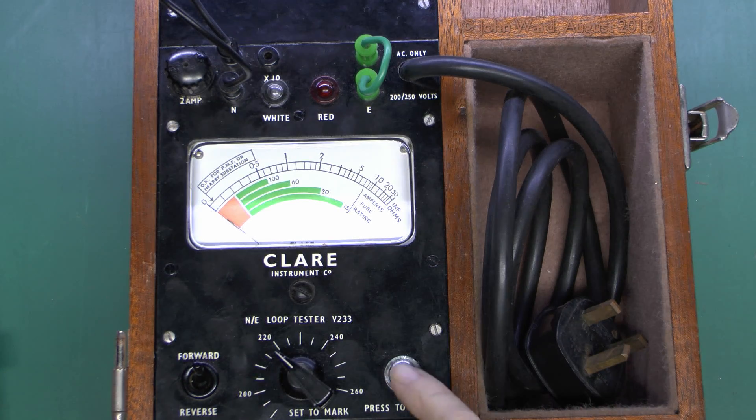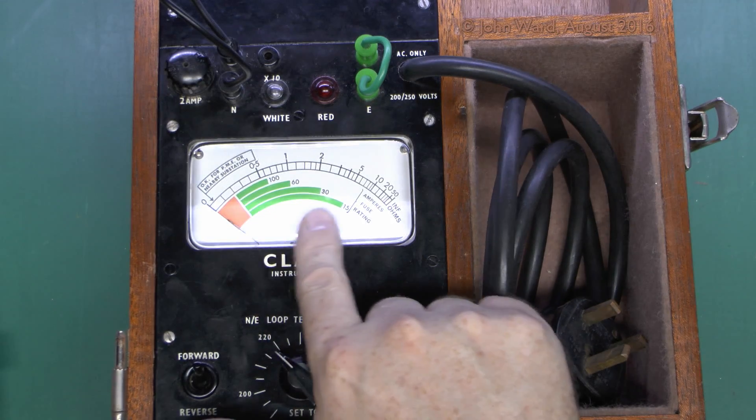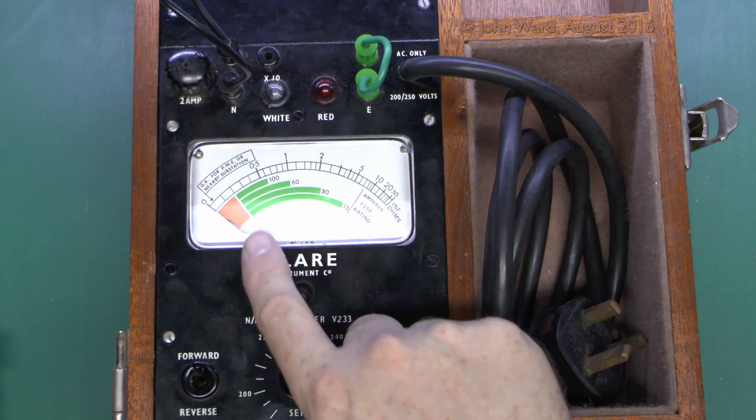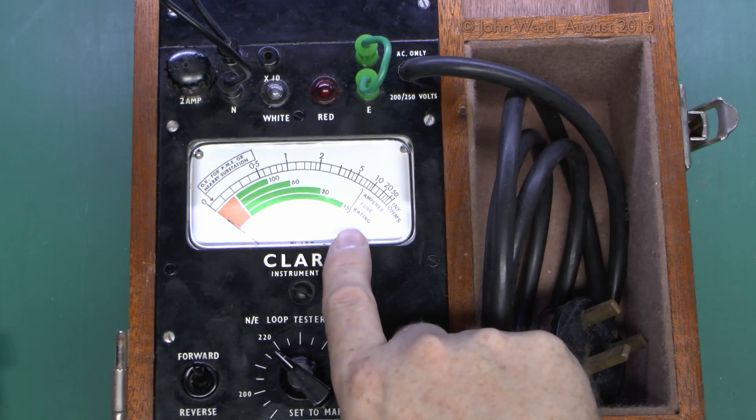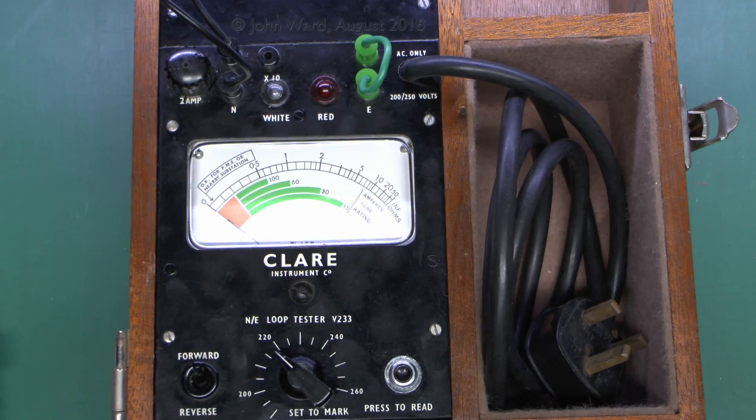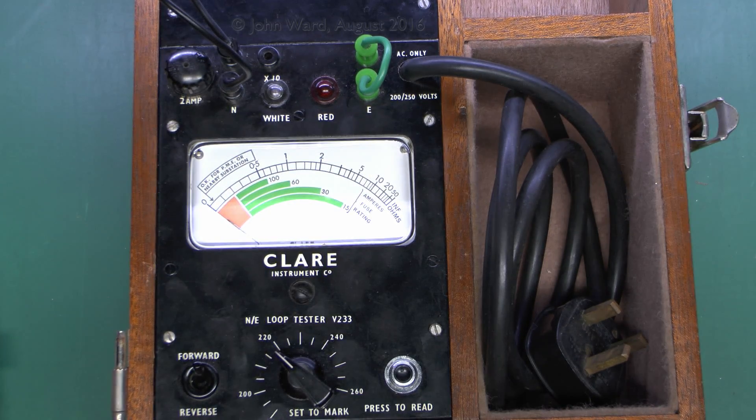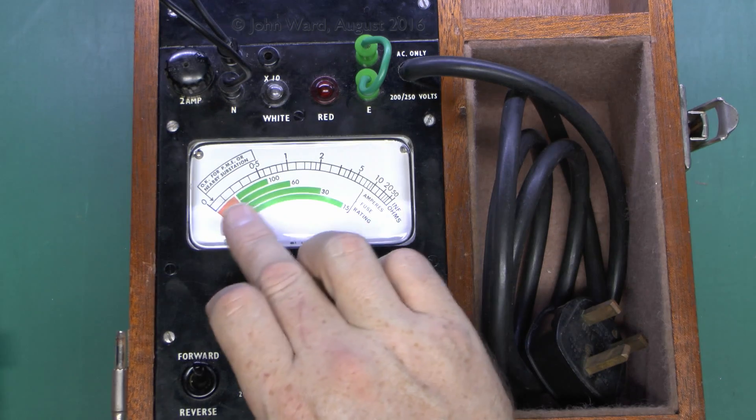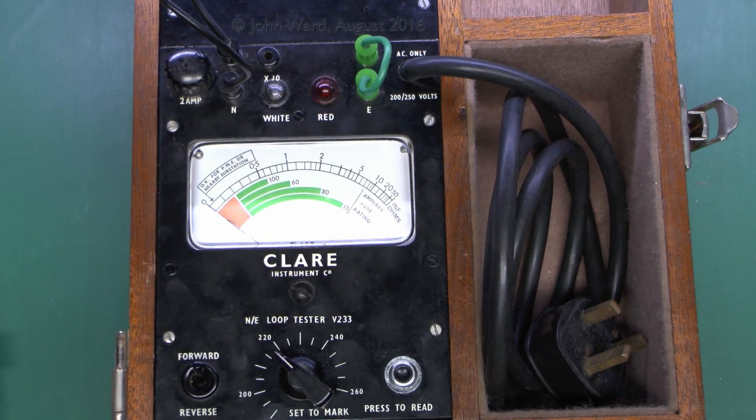And other than that then it's just a question of pressing the test or press to read button. And then the pointer will move from here down to some point along this scale which will give you the actual impedance of the neutral earth loop. The green segments here are intended to show whether it's in the correct kind of impedance range for these ratings of fuses, so you've got 15 amps, 30, 60 and 100. So depending on which value of fuse you were using on the particular circuit, then it would expect to see within the green band as appropriate. As we saw in the previous video, the higher the rating of the fuse or protective device, the lower the impedance needs to be, so that in the event of a fault the current that flows is sufficient to cause the fuse to blow within the required time.